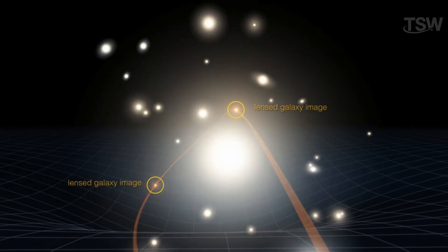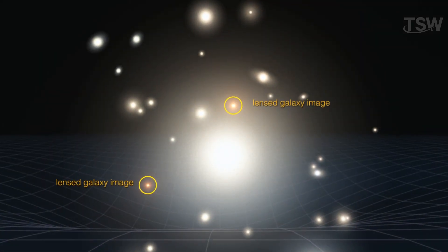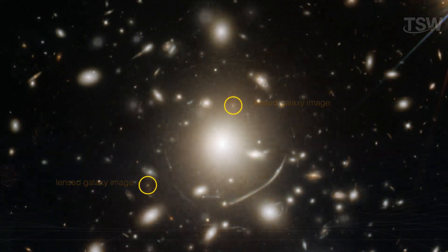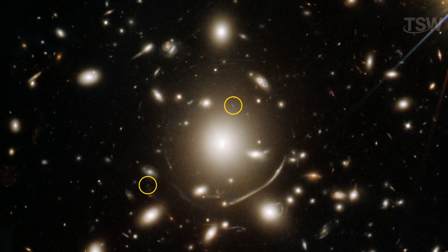Light, which would normally travel in a straight line, is curved by the warping of spacetime, and reaches us by following a different path. And that's what makes it possible to see things that would otherwise be completely invisible.